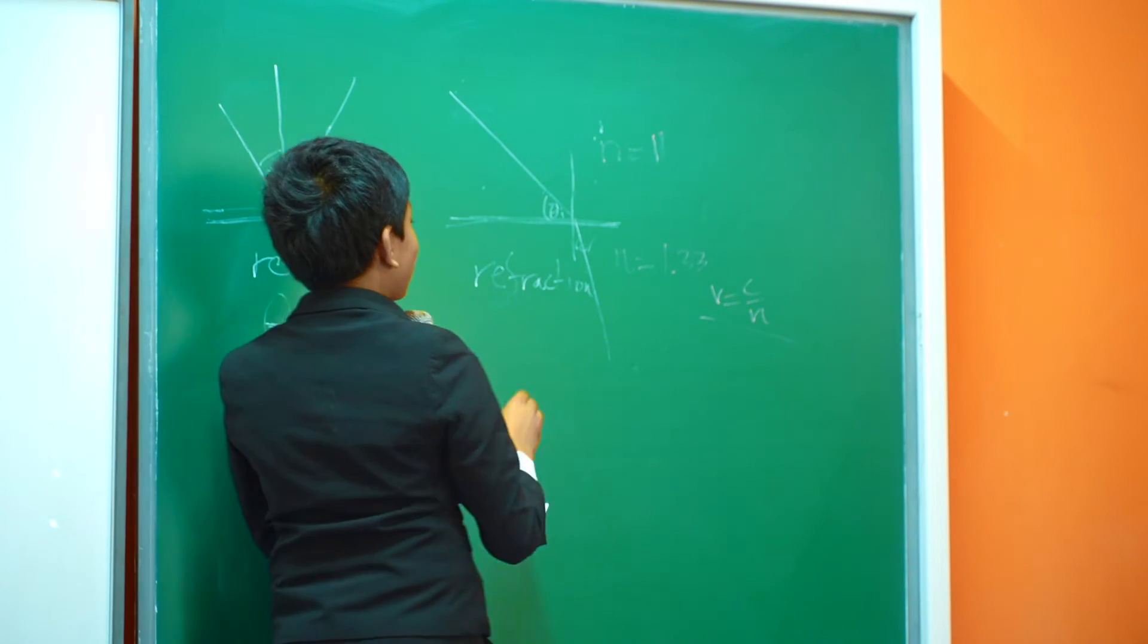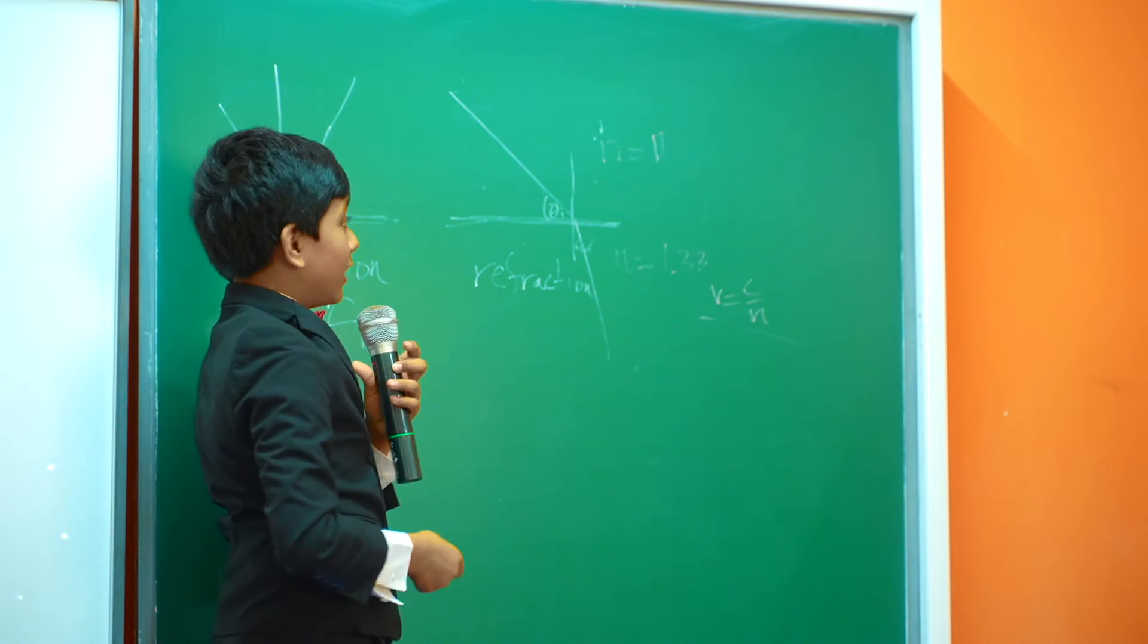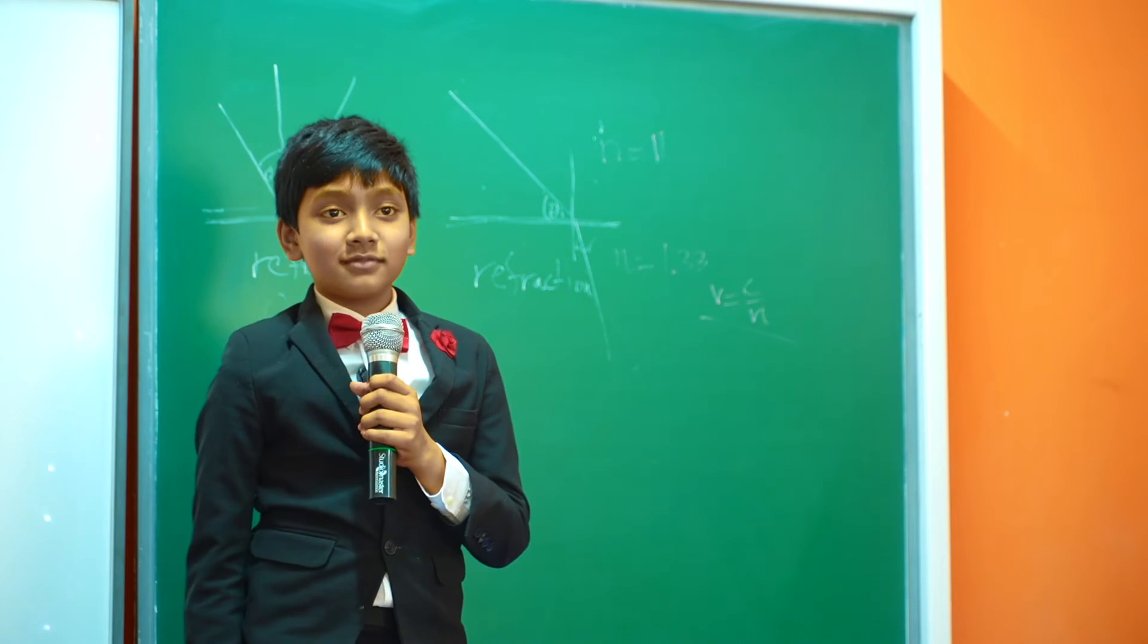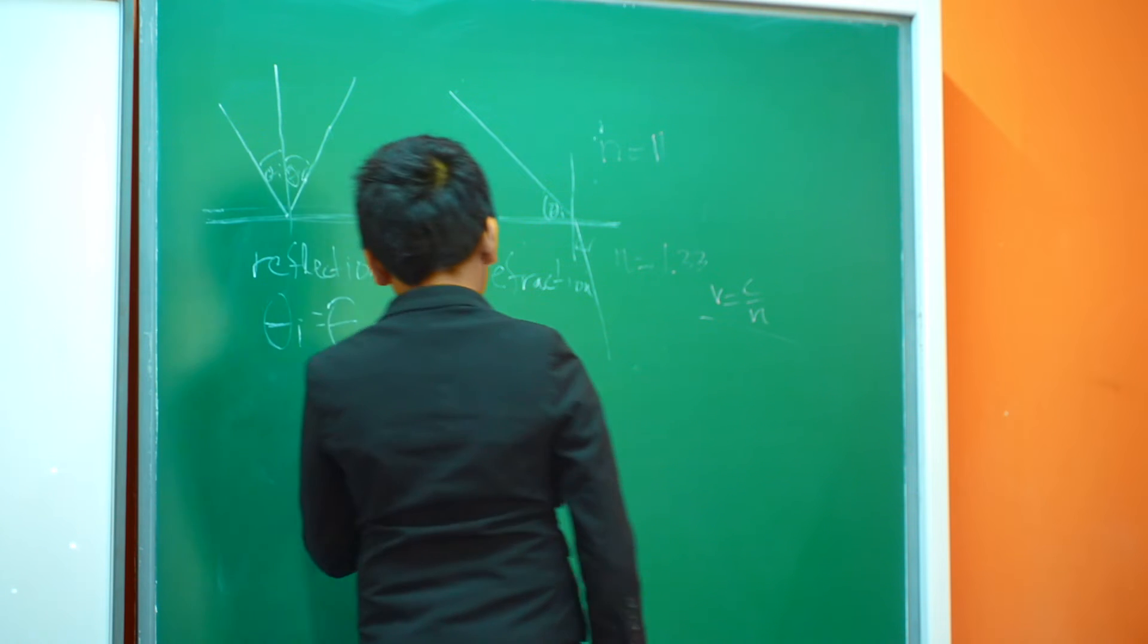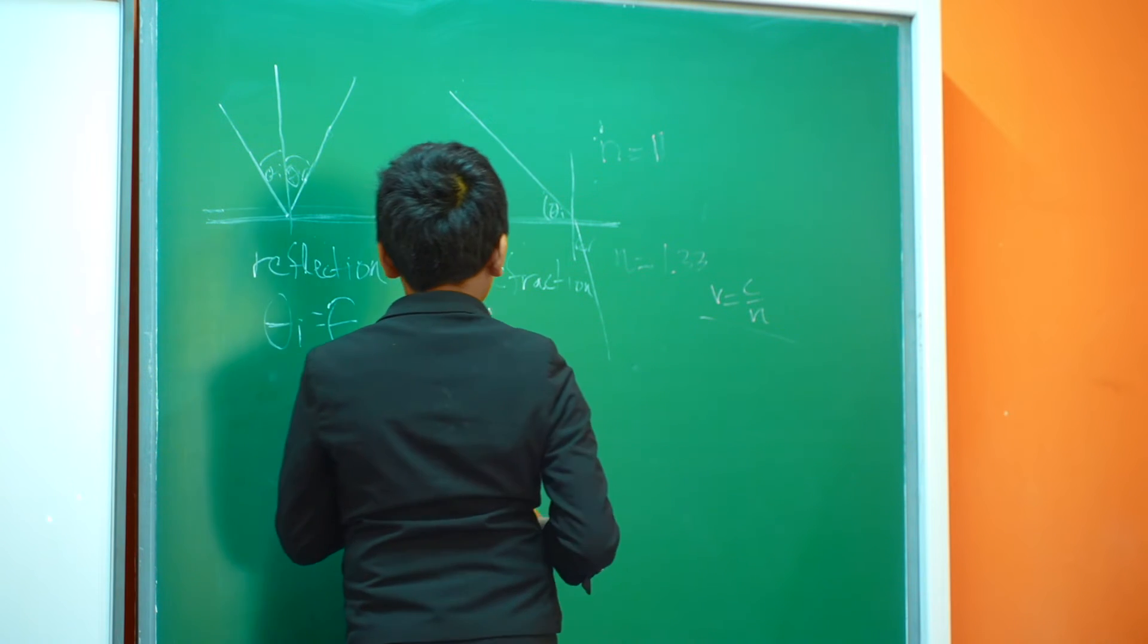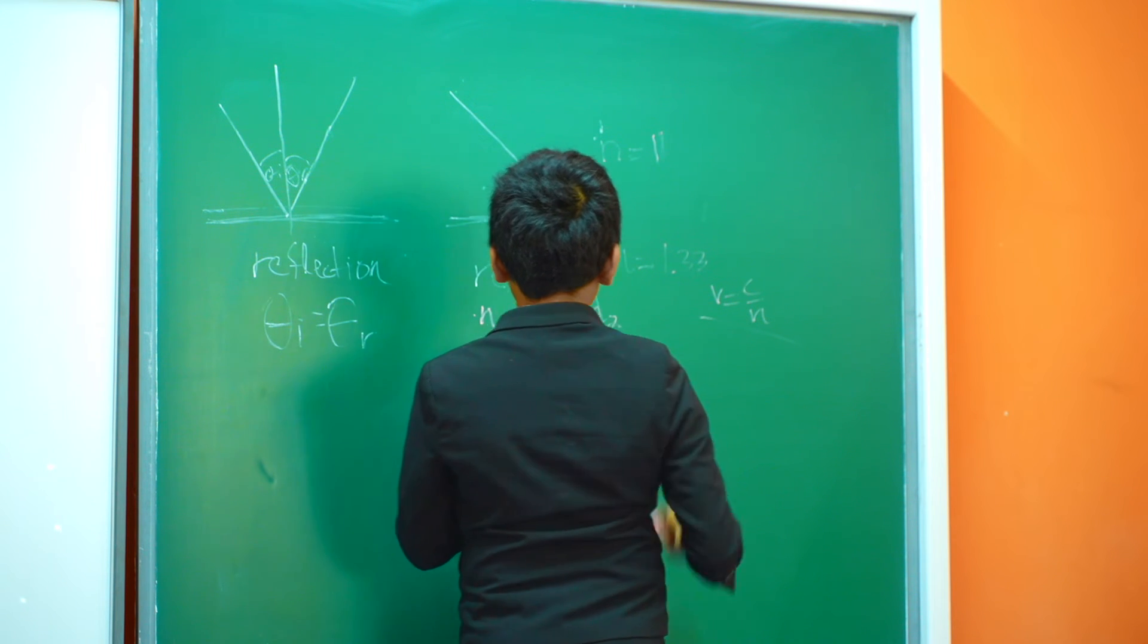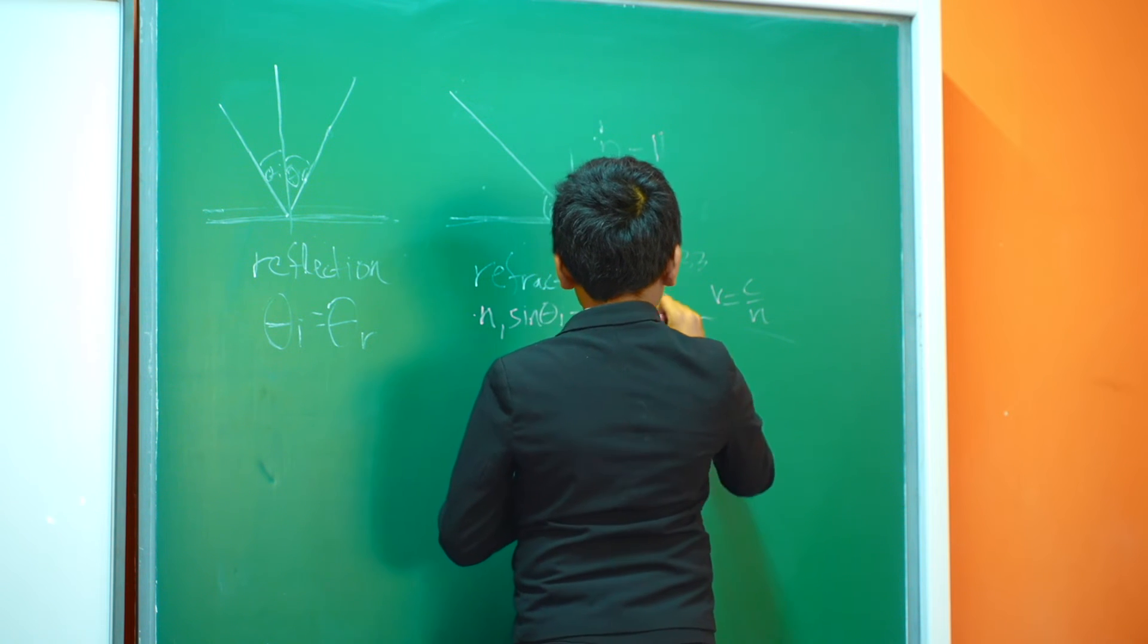So does anyone have an actual specific equation? Because you are correct, it does depend on the indices, but does anyone have a - yes? Snell's called sine theta i by sine theta r equal to refractive index. Okay, that is correct. If you have the first index of refraction followed by the angle of incidence, and then you have the second index of refraction, then you can get theta r.